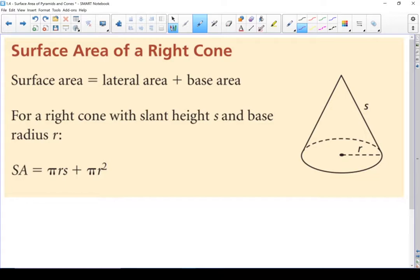Here we have the formula for the surface area of a right cone. So the surface area is the lateral area plus the base area. The base area is all of this space on the bottom. The lateral area is this cone part right here. Put them together and you get the total surface area.